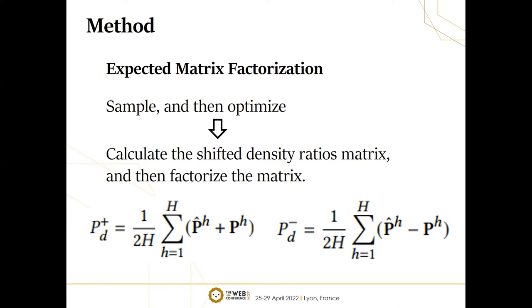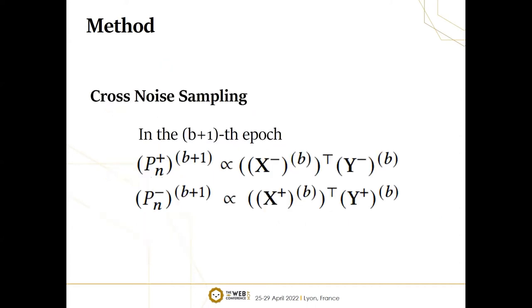For example, we can calculate the data sampling densities PD-plus and PD-minus using these equations. Moreover, we propose cross-noise sampling to solve the last issue. Our noise sampling is based on the assumption that if node I has stronger positive proximity to node J, then node I has weaker negative proximity to node J. For example, if node I is more likely to trust node J, we believe node I is less likely to distrust node J. This assumption is consistent with the intuition and with the empirical investigation on structural balance theory. With this assumption, we use information within each branch to determine the noise sampling within the other branch. These formulas show the noise densities in the B-plus-one-th epoch.